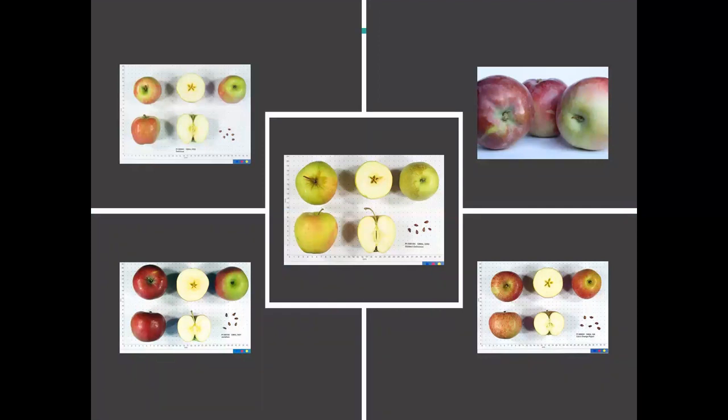Now onto the foundation cultivars of North American and modern breeding in general. Since prior to the 1930s in the 20th century, at least one in five cultivars were descended from either Cox Orange Pippin, Golden Delicious, Jonathan, Red Delicious, or Macintosh.